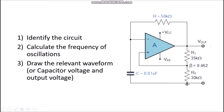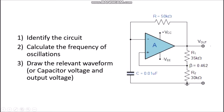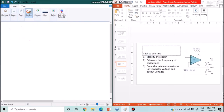Now let us see some problems. Identify the circuit: as soon as we see the non-inverting terminal has feedback, we can say it is a positive feedback, and on the inverting side R and C are there, so this is an astable multivibrator. Calculate the frequency of oscillation and draw the related waveform. We need to show the values of plus beta Vz and minus beta Vz. If plus/minus Vcc equals 15V, we assume Vz equals 13V.